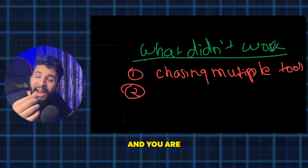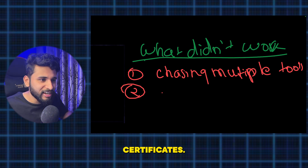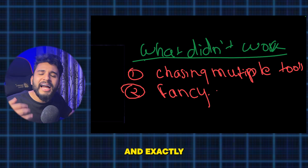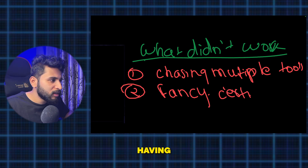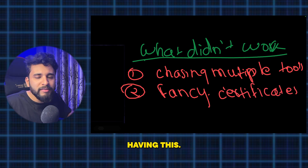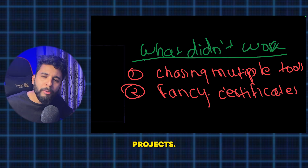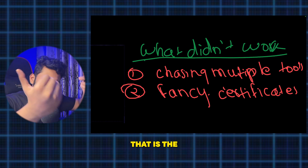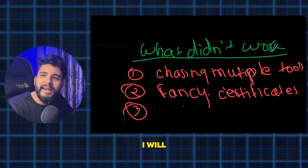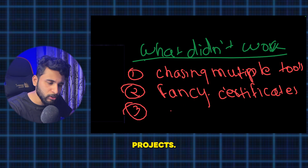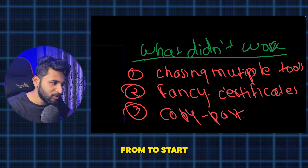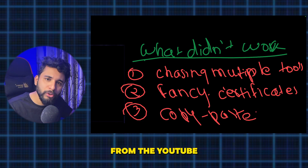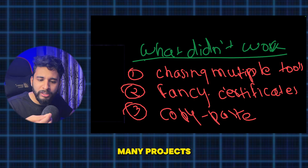The second mistake is having zero hands-on knowledge while collecting fancy certificates. I take many webinars and masterclasses and guide people with hands-on things. If you have fancy certificates but zero hands-on experience, please try to make small projects. If you are learning something, try to make some sort of project — it will make you much more confident.